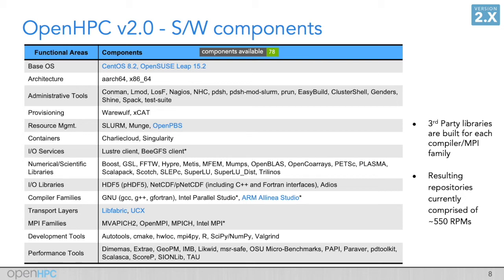due to the fact that we build all of the third-party libraries against multiple compiler and MPI families to ensure ABI compatibility, that means today we have roughly 550 RPMs available in the OpenHPC repositories.